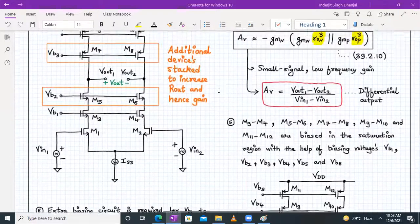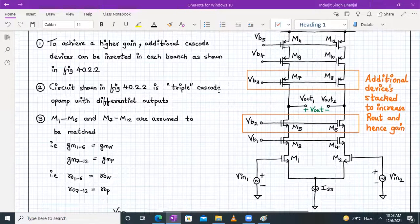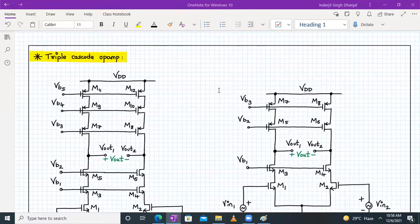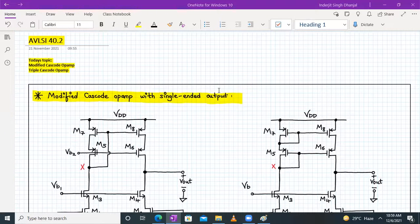In summary, if we stack more transistors to increase the Rout, the gain will increase but it will come at a heavy price of reduced output voltage swing. That's about triple cascode op-amp. We have completed today's topic on modified cascode op-amp with single-ended output and triple cascode op-amp with differential output. Next time we'll start with folded cascode op-amp. Thank you for joining and have a good day.